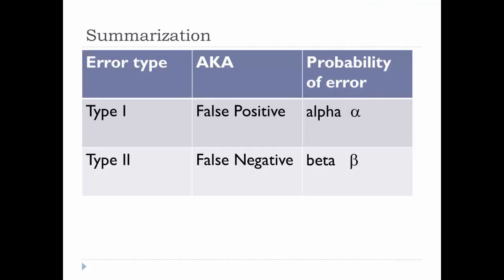Let's do a quick summary. Type 1 error means that you have a false positive — you rejected the null in favor of the alternative hypothesis when, in fact, the null was valid. The probability of making the wrong decision when the null hypothesis is true is denoted by the significance level alpha. Type 2 error means you accepted the null hypothesis when in reality you shouldn't have — a false negative. The probability of a Type 2 error is denoted by beta. One way to remember which is which: the word 'null' has significantly fewer letters than 'alternative' — 4 is less than 11, just as 1 (Type 1) is less than 2 (Type 2).